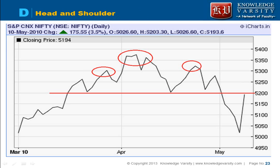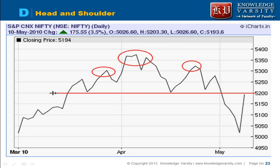This is an example of a head and shoulder pattern. Note that this looks like a head — over here it is like a head, and these are the two shoulders. The stock price is in an uptrend; it is increasing. This is called your neckline — this red line is your neckline.